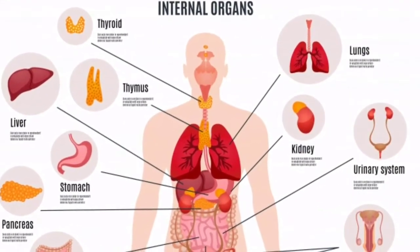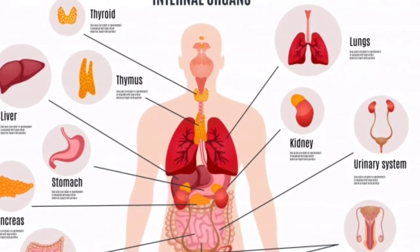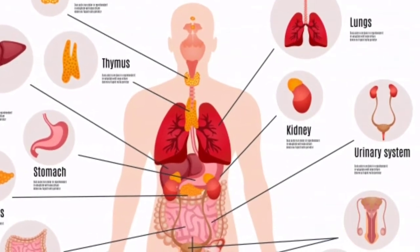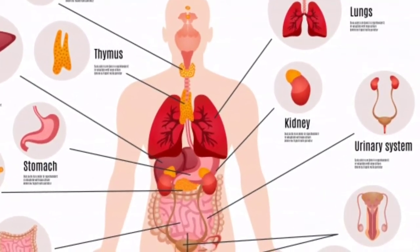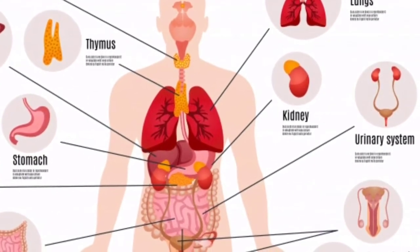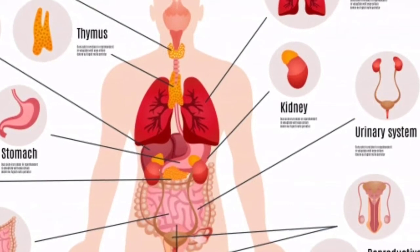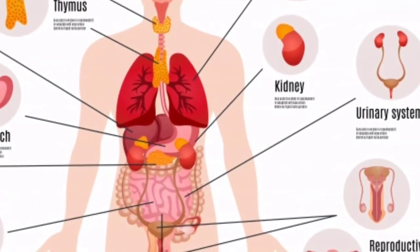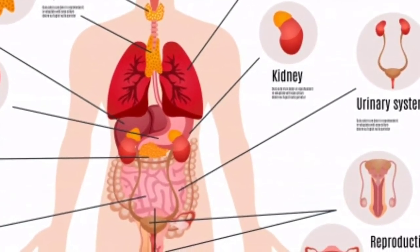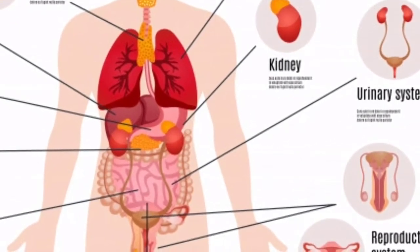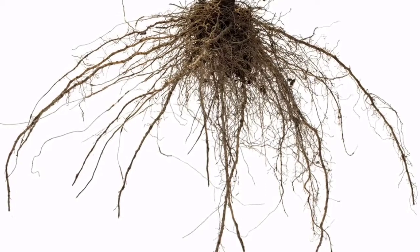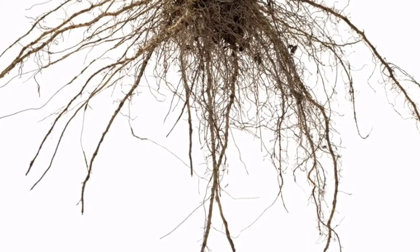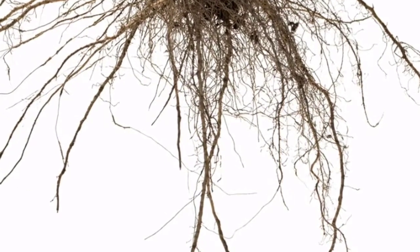Now let's discuss the function of the cell. Each living organism has many organs. You are all familiar with the digestive system. The digestive organs together constitute the digestive system, and each organ in the system performs different functions. The functions of the digestive system are digestion, assimilation, and absorption.